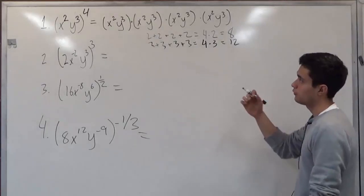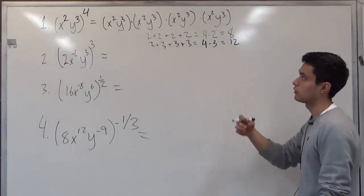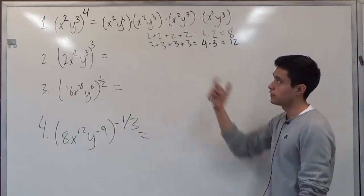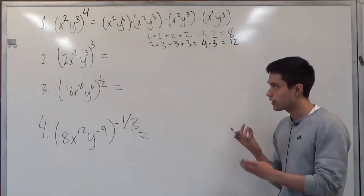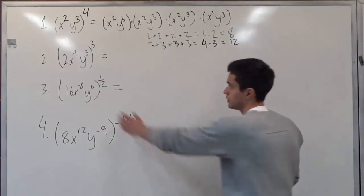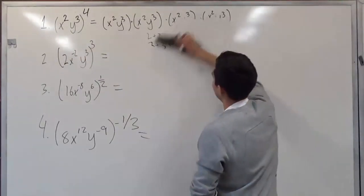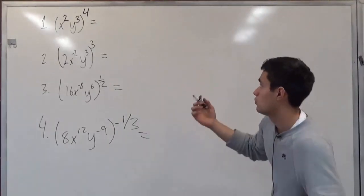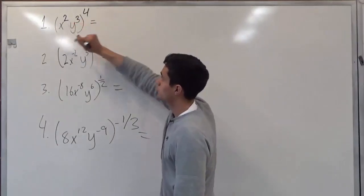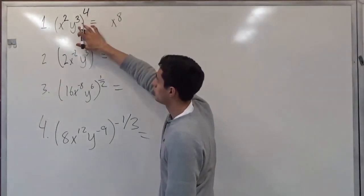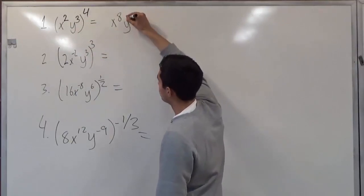So suppose if we have a larger number, like say 16, this way wouldn't be that efficient. So we try to break it down into something smaller and use the same rule. So since we know this, we can just say 4 times 2 will give us x to the 8th, and 4 times 3 will give us y to the 12th.